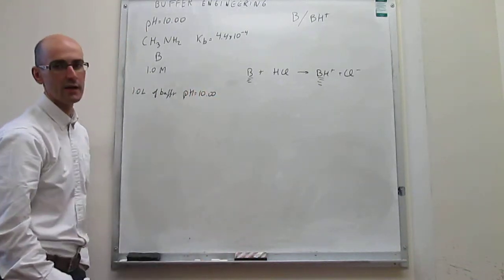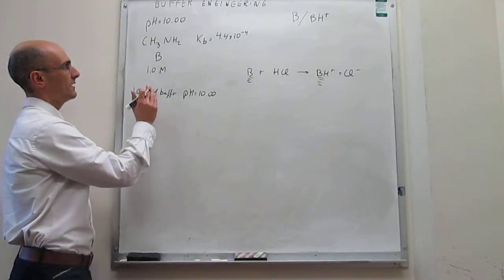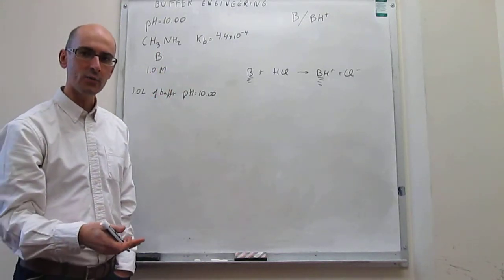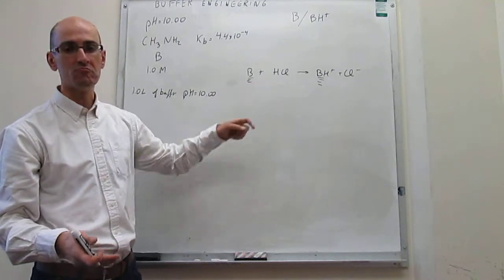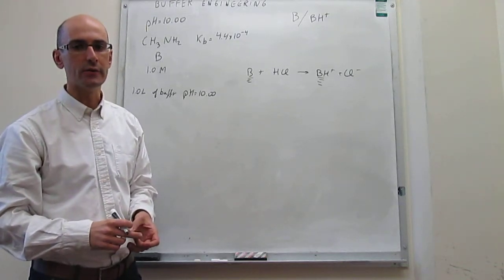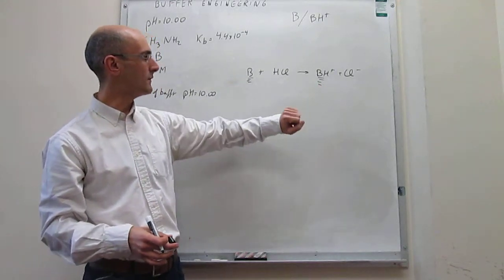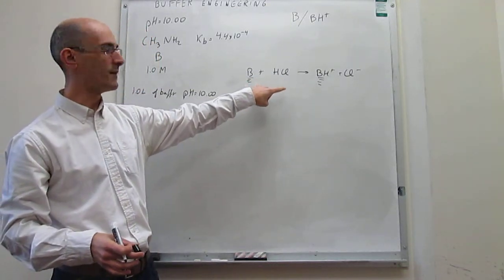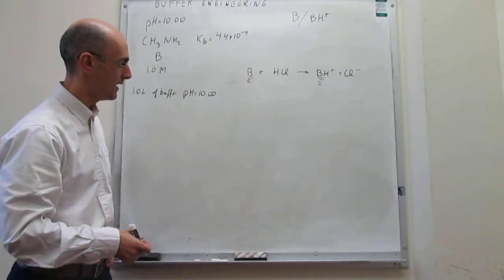So the question is how do we generate this buffer? The key is to recognize that if we only take the solution of the base, there's no conjugate acid — so somehow we have to generate the conjugate acid. The way we're going to do it is by running the reaction with hydrochloric acid, and we need to figure out how much HCl to add to methylamine to generate an amount of conjugate acid that gives us pH 10.